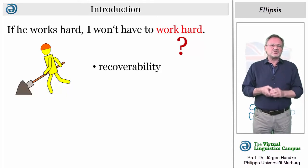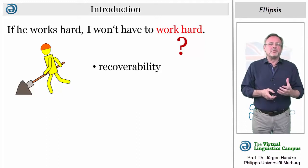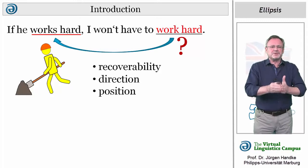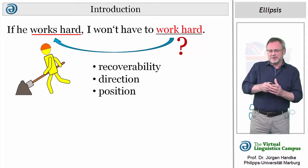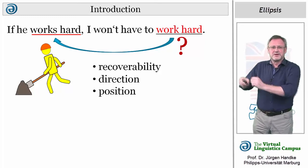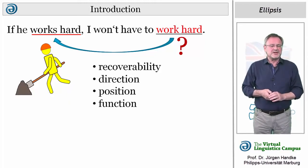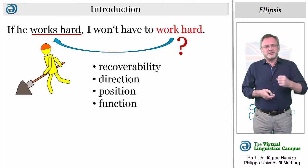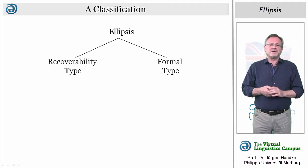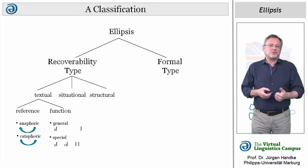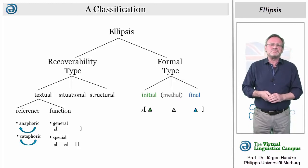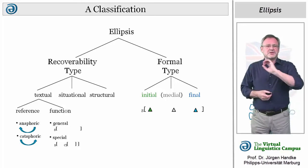That is, how the actual word or words whose meaning is understood or implied can be recovered. Another parameter is more formal — it looks at the position of the ellipsis'd elements and their direction of reference. Here we have a backward direction. Last but not least, we can define a functional parameter that looks at the relationship between the antecedent and the ellipsis'd part. The two main types, the recoverability type and the formal type, can be associated with several subcategories, with further categories that may even be beyond the linguistic context, or with categories that simply refer to the position of the ellipsis'd elements within the sentence.